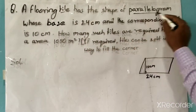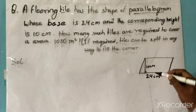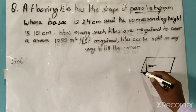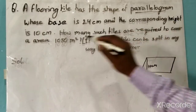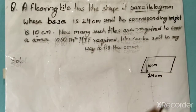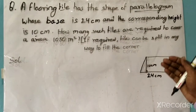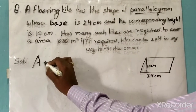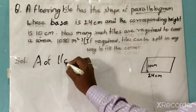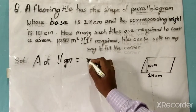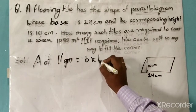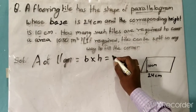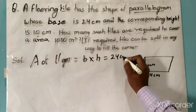In the question it is given that the shape of the tile is a parallelogram. I have drawn this diagram — its base is 24 centimeters and height is 10 centimeters. We know how to find the area of a parallelogram: area of parallelogram is equal to base into height, that is 24 centimeters into 10 centimeters.